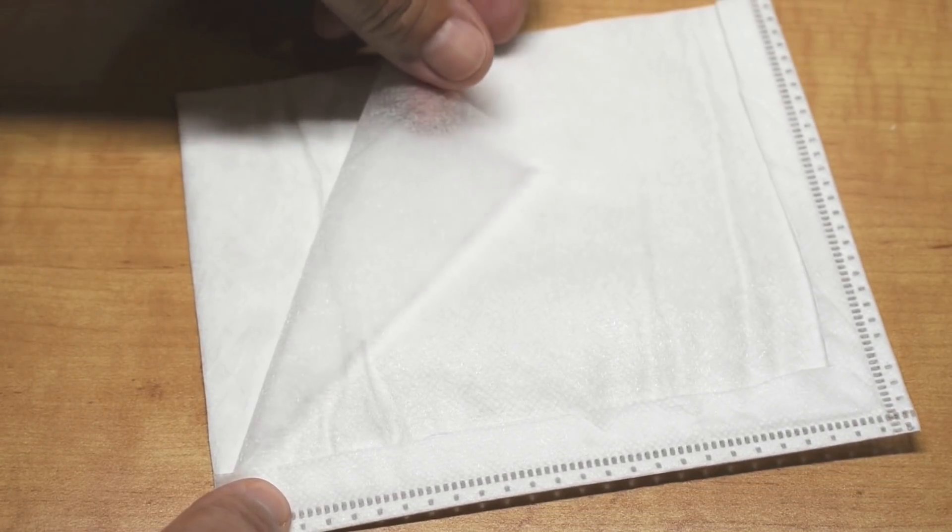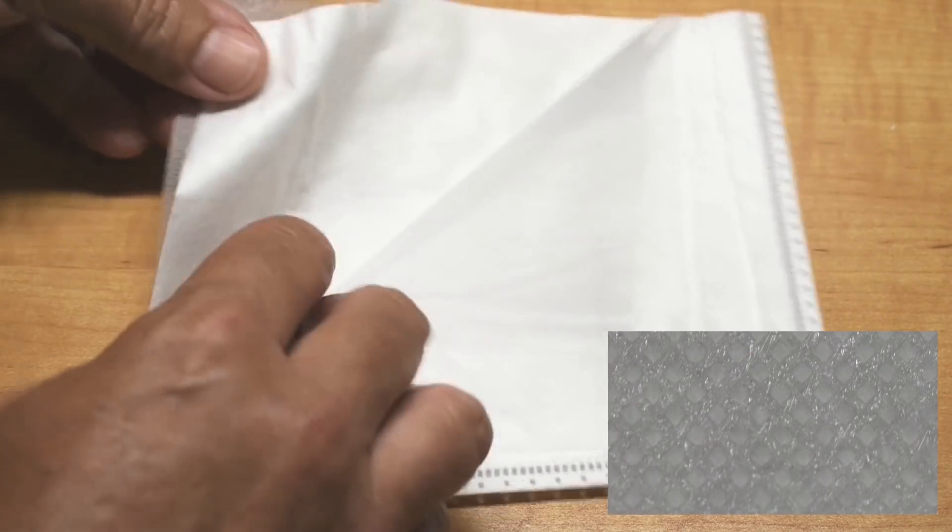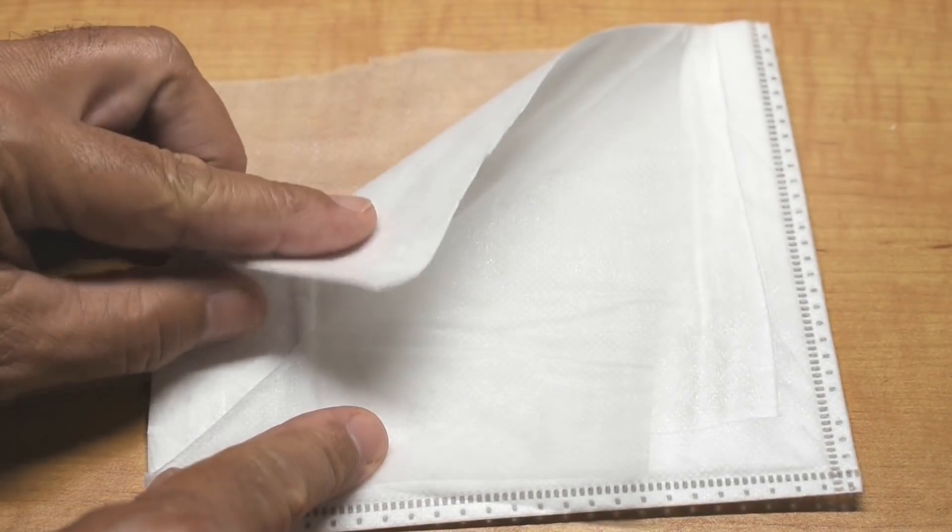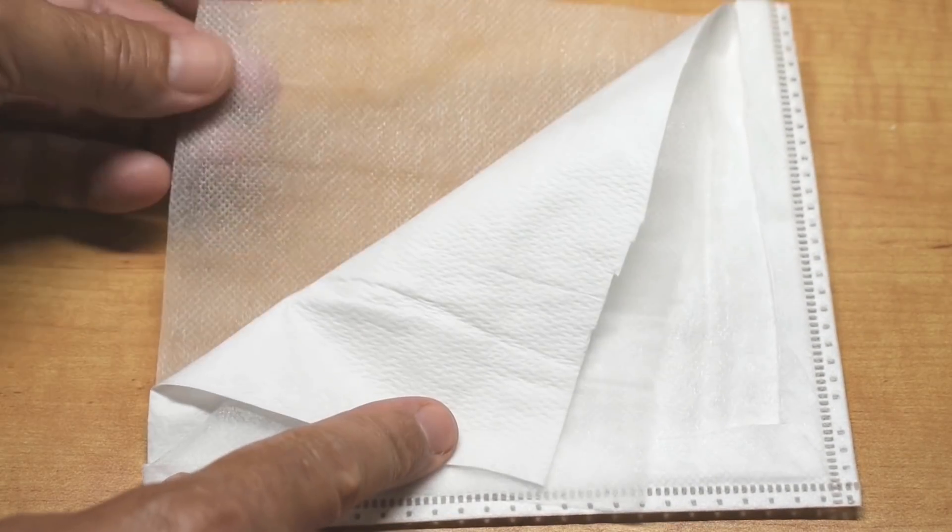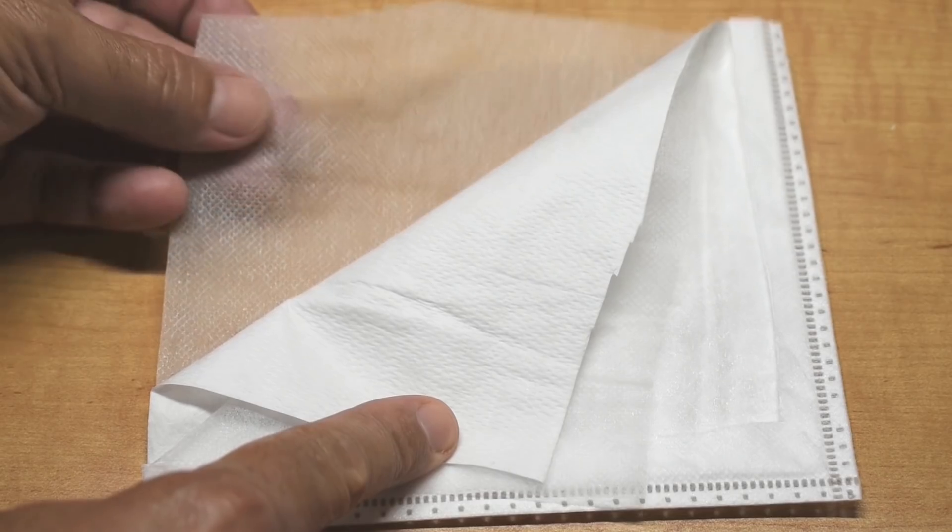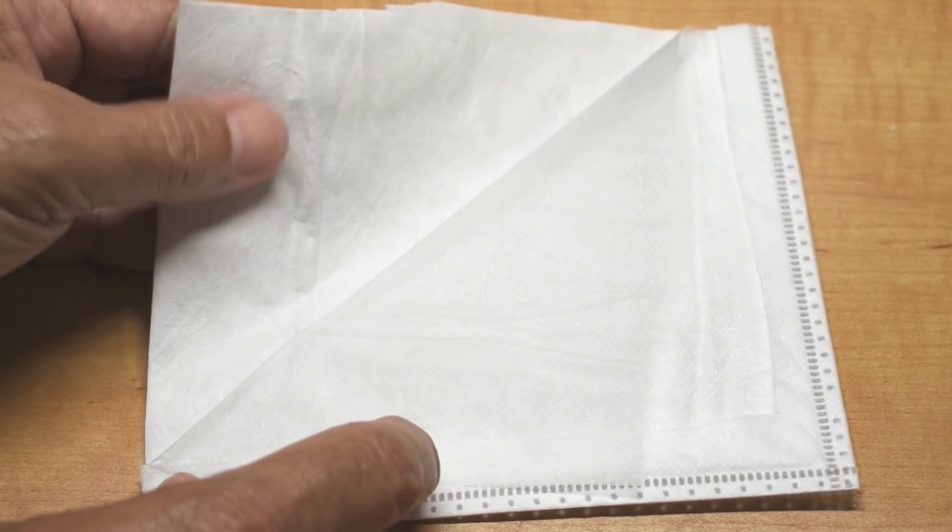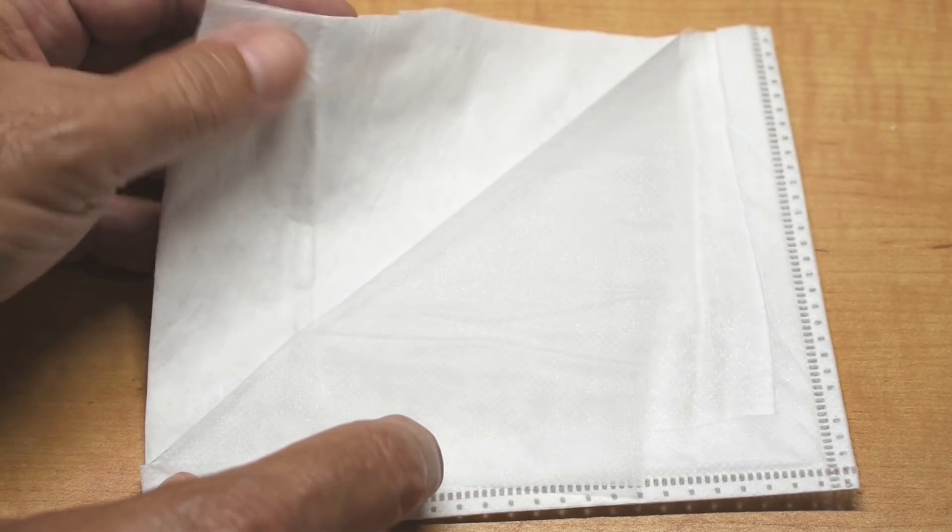You have that thin layer like the N95. And then in the middle you have that thicker layer, just like the N95 mask. And over here, just like the N95, you have that other layer. So this one has a little bit less in the center compared to the N95, but it is a thick layer.